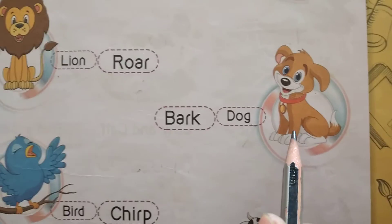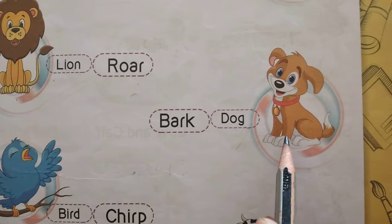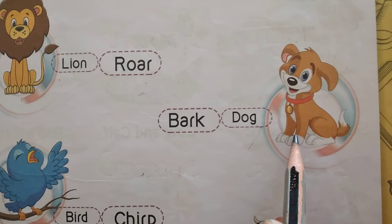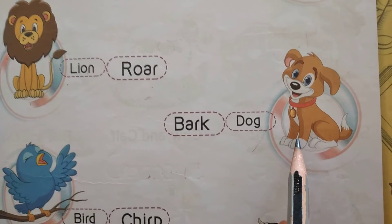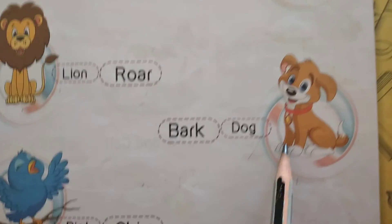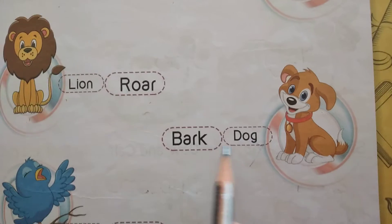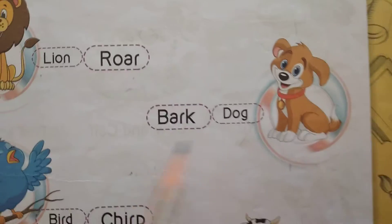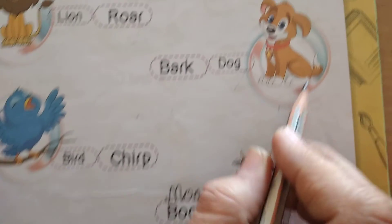Dog. Which animal? Dog. D-O-G. Dog says bark. Dog says bow-bow.